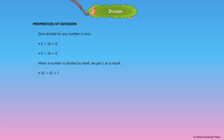For example, 42 divided by 42 is equal to 1, and 75 divided by 75 is equal to 1. A number divided by 1 is always the number itself. For example, 45 divided by 1 is equal to 45, and 300 divided by 1 is equal to 300.